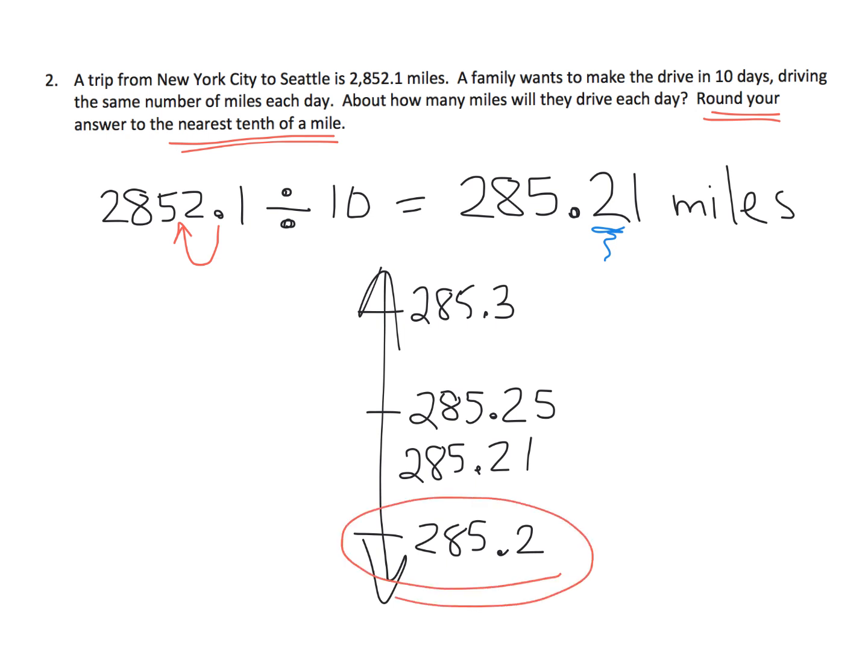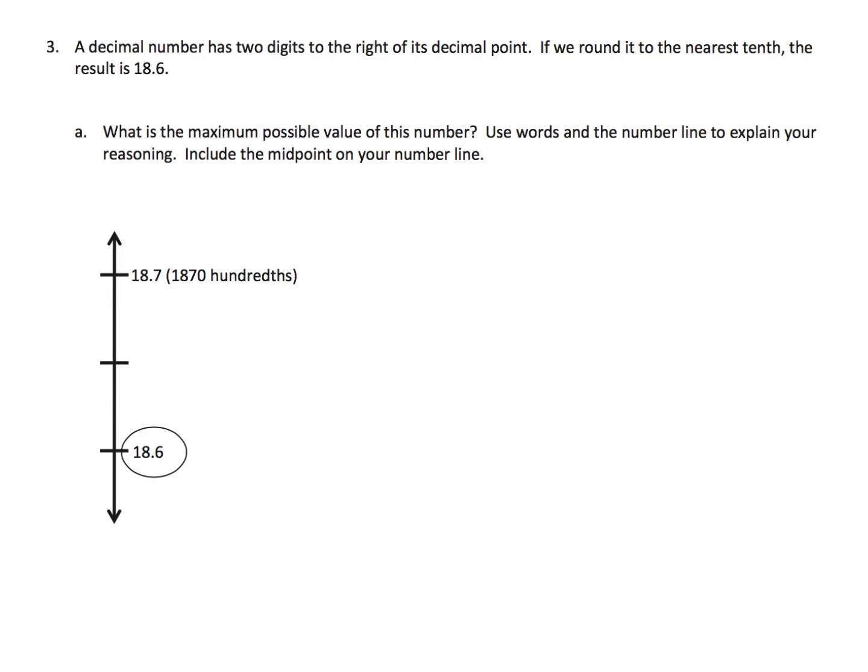And the last slide for this video: a decimal number has two digits to the right of its decimal point. If we round it to the nearest tenth, the result is 18.6. What is the maximum possible value of this number?